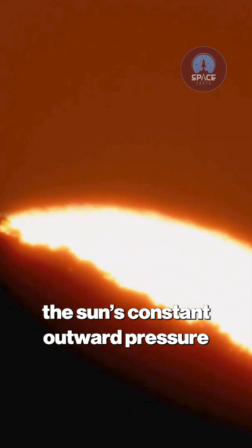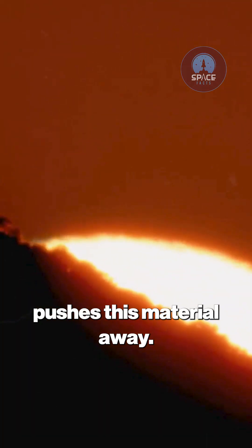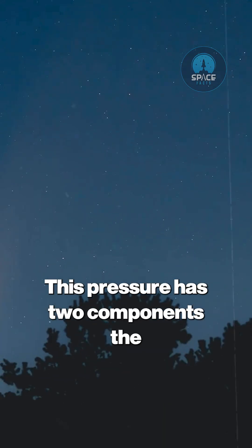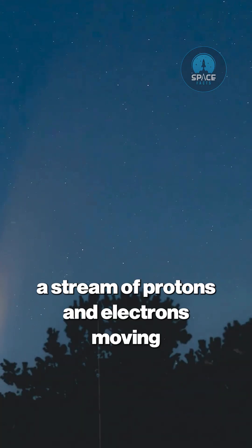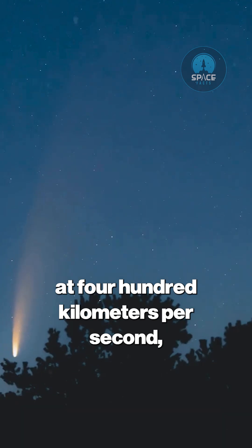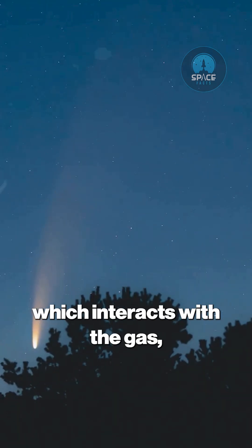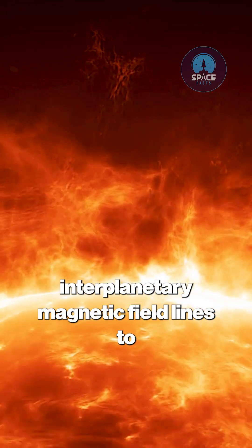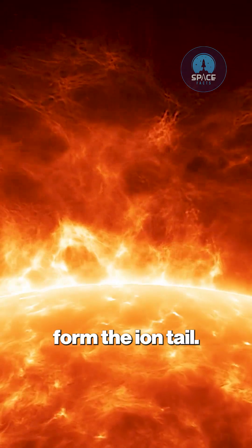Then, the sun's constant outward pressure pushes this material away. This pressure has two components. The solar wind, a stream of protons and electrons moving at 400 kilometers per second, which interacts with the gas, ionizes it, and carries it straight back along interplanetary magnetic field lines to form the ion tail.